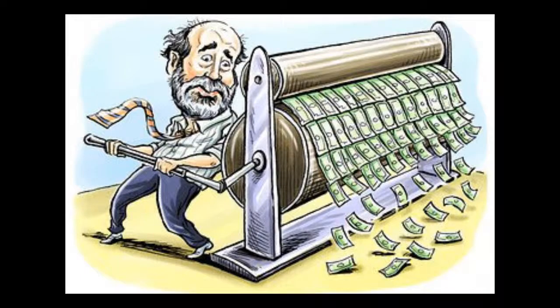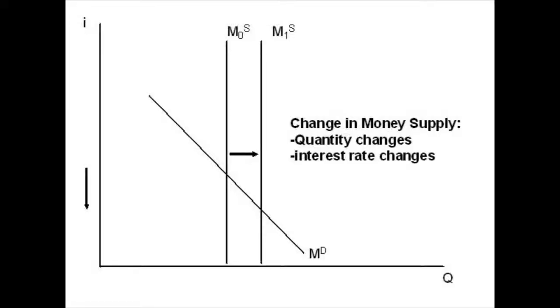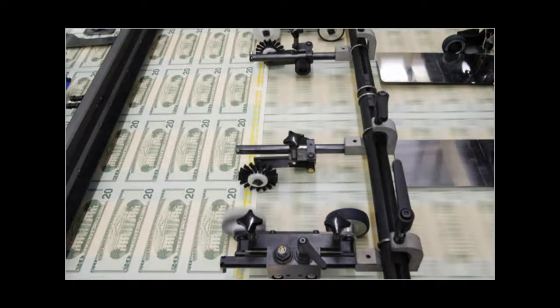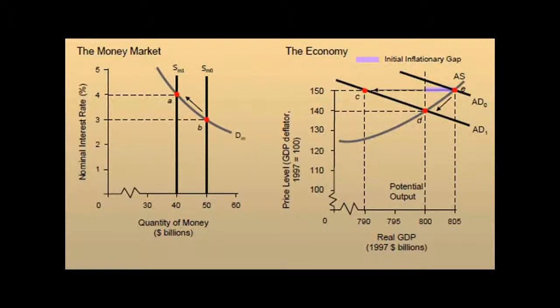Another way that governments manipulate the AD/AS curves is with monetary policy. With monetary policy, the Bank of Canada increases or decreases the money supply of the country, and by increasing or decreasing interest rates, they shift the aggregate demand curve left or right. When you hear on the news about money being printed constantly, you are hearing of expansionary monetary policy — this is when they boost aggregate demand by increasing the supply of money, usually done when AD is in the recessionary gap, since it will not cause high inflation. The opposite holds true for contractionary monetary policy, which is done when AD is in the inflationary gap.